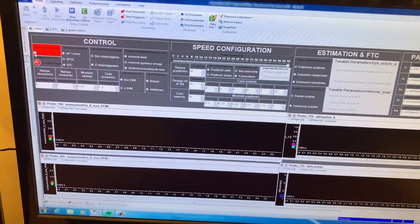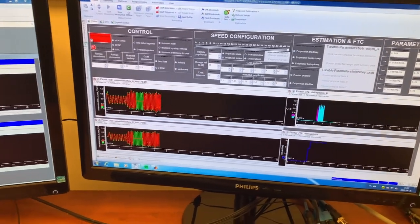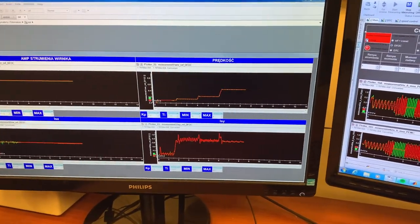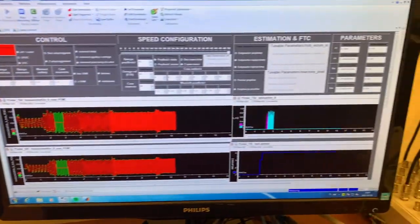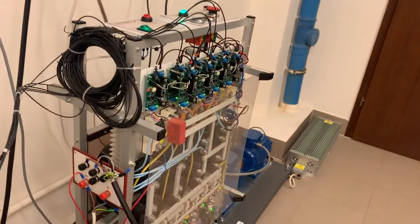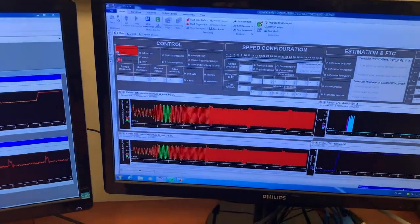In the presented work a stator current estimator called virtual current sensor has been proposed, which allows fault detection of a faulty sensor and a smooth transition to the control in emergency mode. In case of the outage of both current sensors in the drive it enables the current sensorless mode operation.